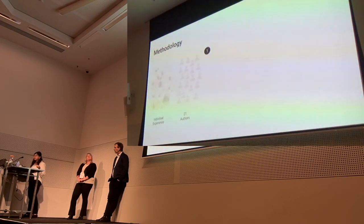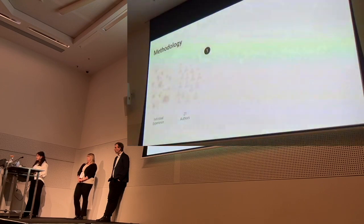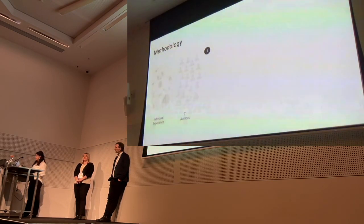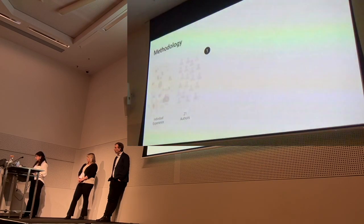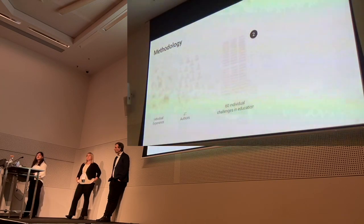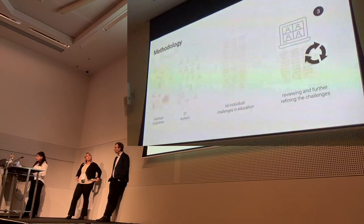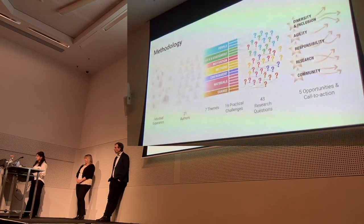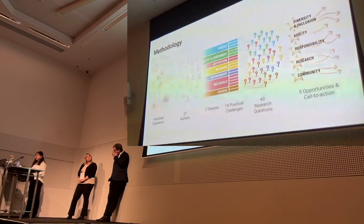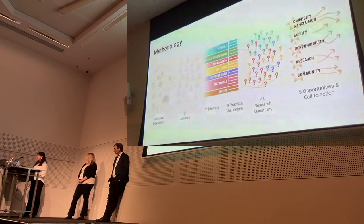Some of us decided to take our discussions further and outline these challenges. We have 21 members with diverse backgrounds — through group discussions and meetings we collected rich and diverse experiences from everyone. Some had many years of teaching experience, some were teaching for the first time, teaching students at university or practitioners. Through hours of discussion, we collected an initial list of 60 individual challenges, then refined and reformulated them through several follow-up meetings over several months, arriving at seven themes of challenges encompassing practical challenges, 43 research questions, and five opportunities and calls for action.